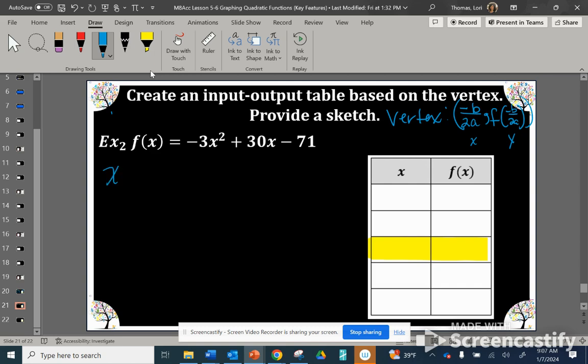The x-coordinate of our vertex is negative times the B value over 2 times the A value. So that's negative 30 over 2 times negative 3, which gives us positive 5. The vertex x-coordinate is 5.